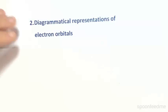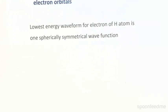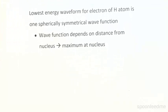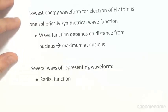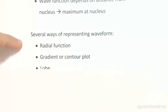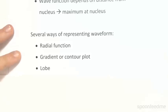In the last video I spoke about how we can use 3D waves to describe electrons. The lowest energy waveform for an electron of a hydrogen atom is one spherically symmetrical wave function. This wave function depends on the distance from the nucleus, with it being maximum at the nucleus. There are actually several different ways of representing these kinds of waveforms: as a radial function, as a gradient or contour plot, or as a lobe. This is typically how 3D orbitals are represented.